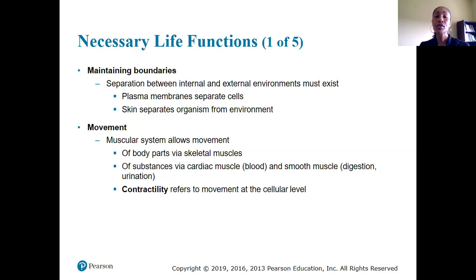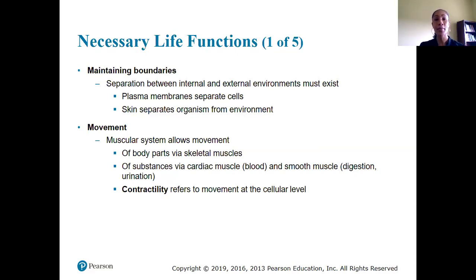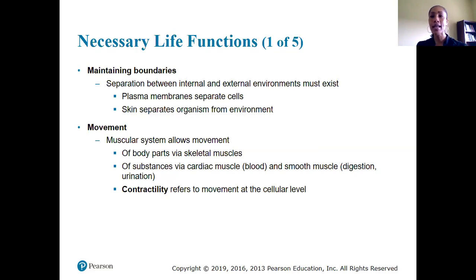Movement: our muscular system allows us to move because muscles contract, aiding movement of our body parts through skeletal muscle. We need contraction of the heart and lungs. We also need movement of substances in the body — think of blood flowing through vessels, and processes of digestion, urination, defecation, and so forth — moving waste products out of the body and nutrients into our cells, as well as hormones and other substances throughout the body.